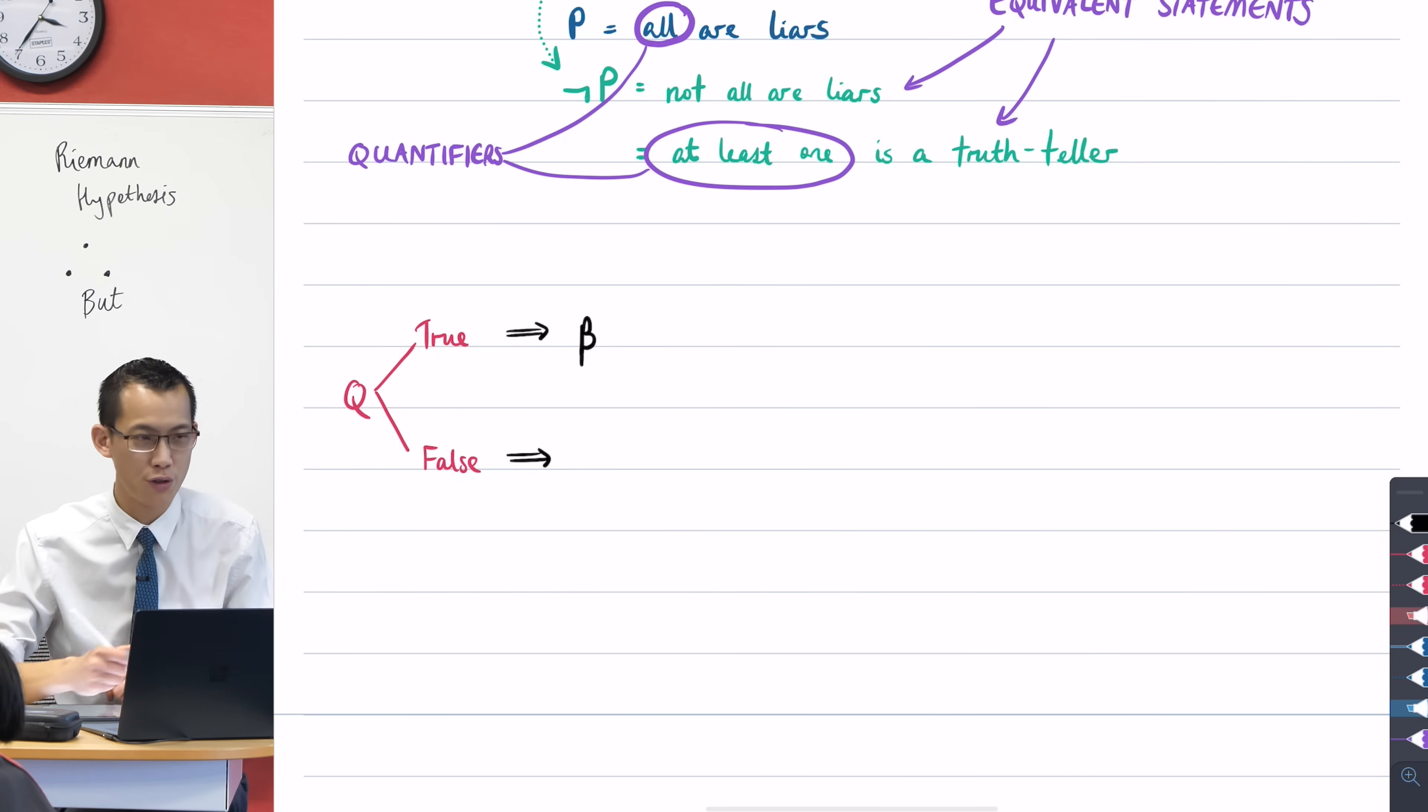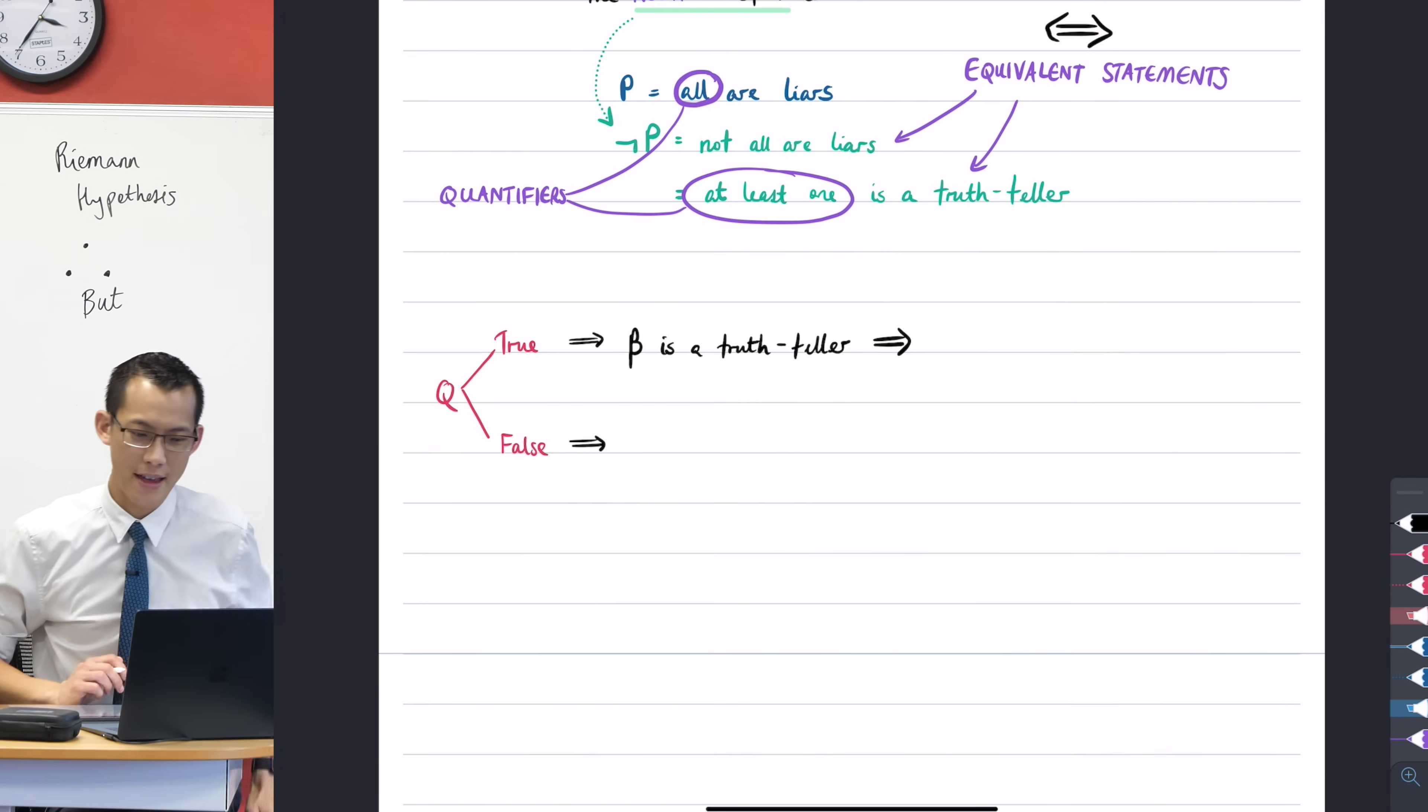I'm going to truncate some logic here because I think you're following already. If Q is true, what can we say about this second person beta? If their statement's true. He's a truth-teller. Yeah, he's a truth-teller. And we know already the substantiation for that. It's the same as up above. So beta would have to be a truth-teller because only truth-tellers tell truth.